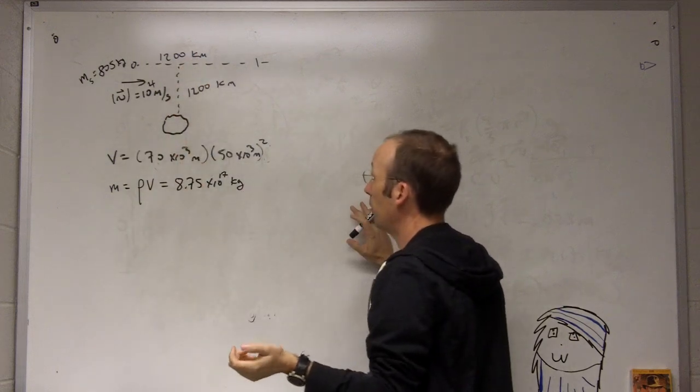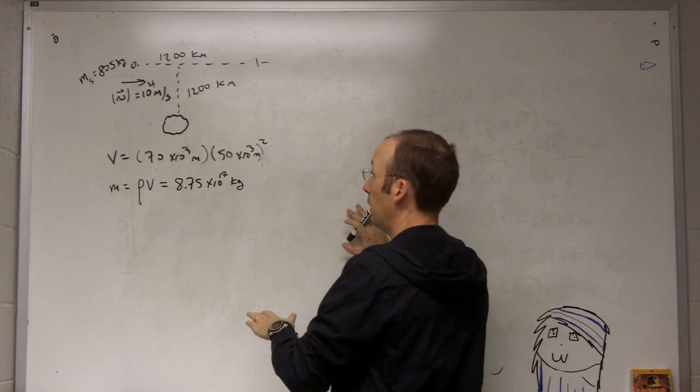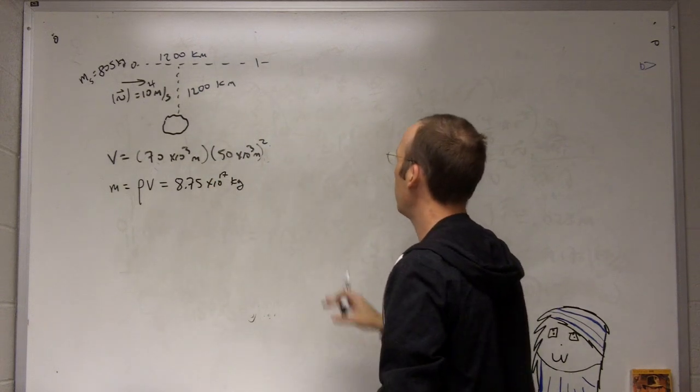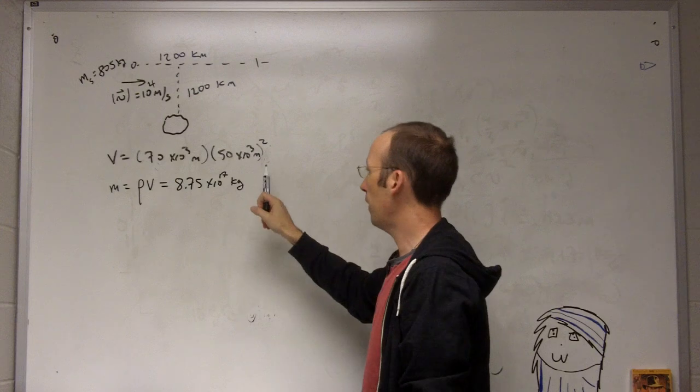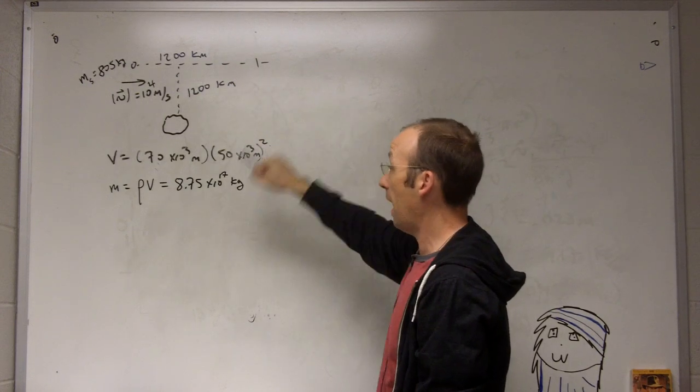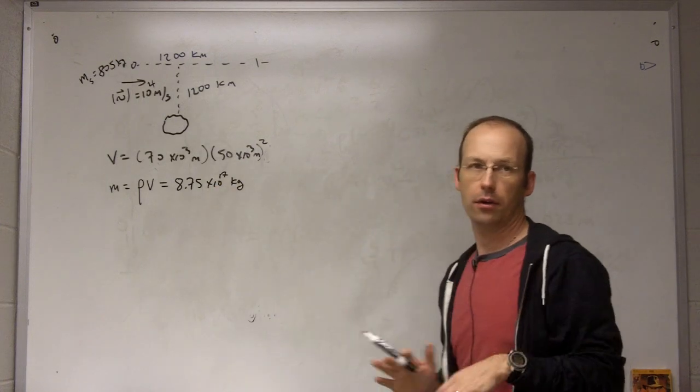They give the distance as 1200 kilometers, the speed of the satellite, and the volume. Oh, I squared the volume of the asteroid and the mass. Well, they give the density so I calculated the mass. I don't want to spend time on that.